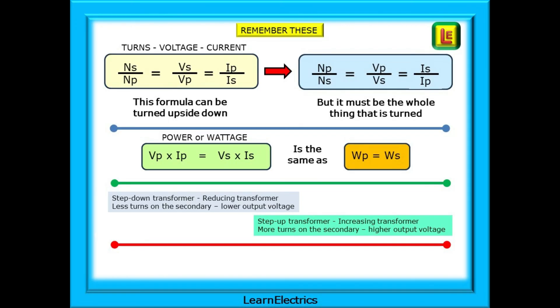And just to recap, here are the two formulas that you will need for transformer calculations in electrotechnical exams. The top formula is the turns, voltage and current formula and this can be turned upside down but you must turn the whole thing, the whole formula, so that all the factors retain their relative positions.